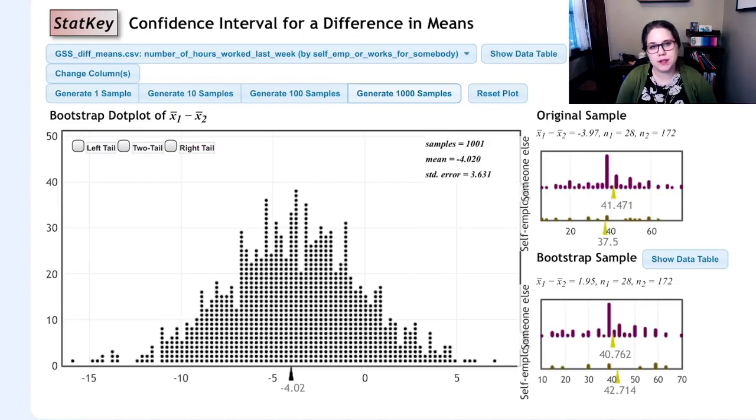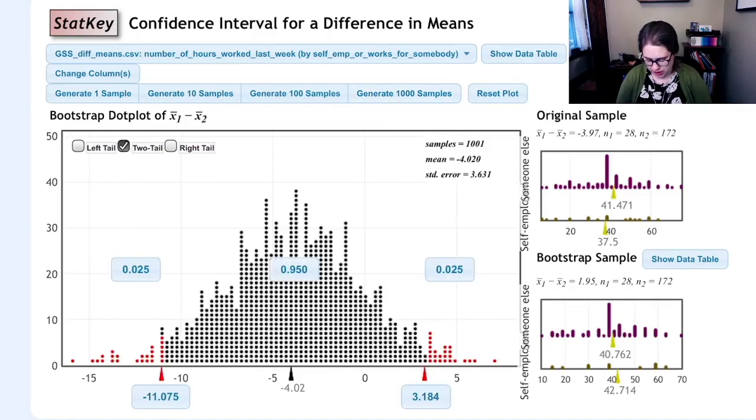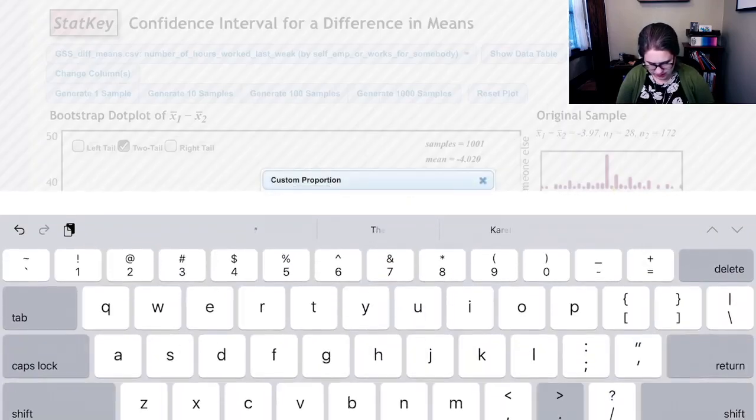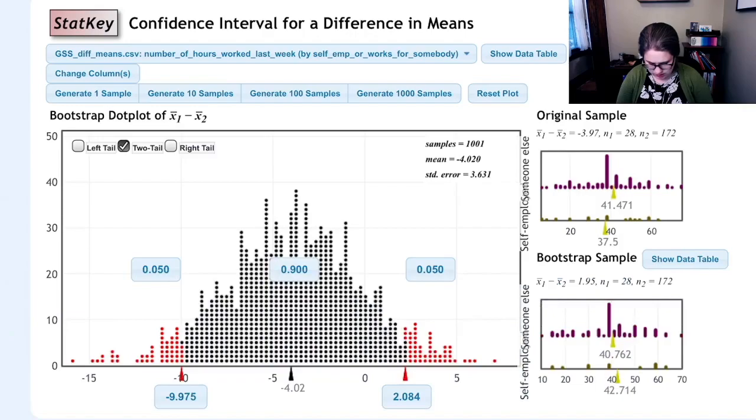There are two ways I could do a confidence interval here. The easiest one is just to do a two-tail. I should change this to not be 0.95 but 0.9 to be consistent. There we go.